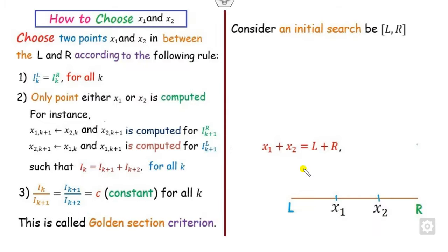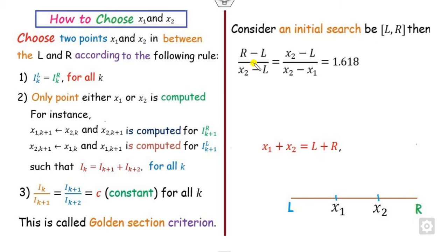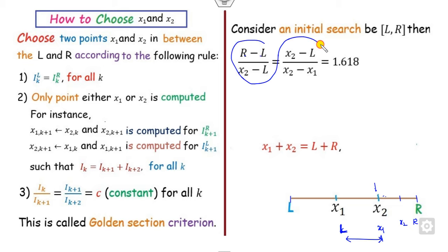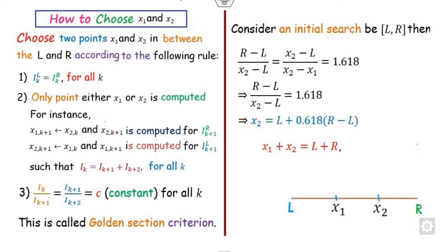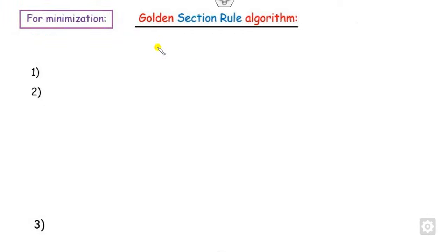Once you find c = 1.618 and know l, the length x1 minus l and r minus x2 are equal. You can substitute and write that i_k equals r minus l. For the next interval, you can find x2 from the formula. Once you know x2, you can find x1 from x1 = l + r − x2. This is the rule to compute x1 and x2.